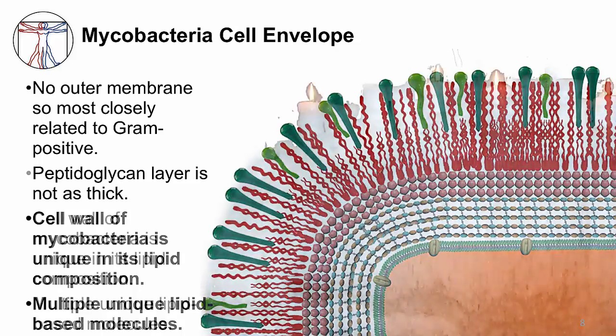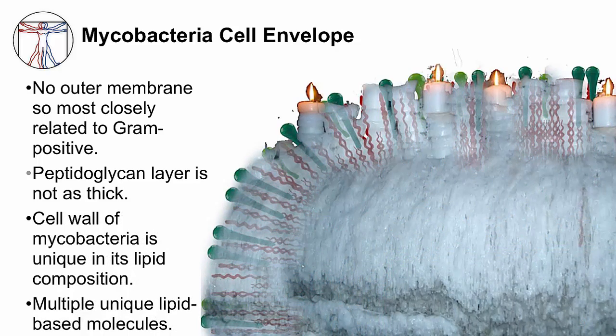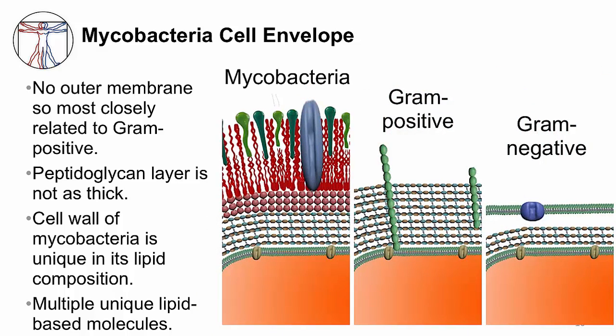You might imagine the cell envelope to look like this mass of wax from lots of melted candles. These three figures show you how the mycobacteria cell envelope compares to gram-positive and gram-negative bacteria. They all have an inner membrane and a peptidoglycan layer, but the thickness differs. Mycobacteria's layer is not as thick as gram-positive bacteria, but thicker than gram-negative. Neither mycobacteria nor gram-positive bacteria have an outer membrane like gram-negative bacteria, and only mycobacteria have a unique lipid layer.